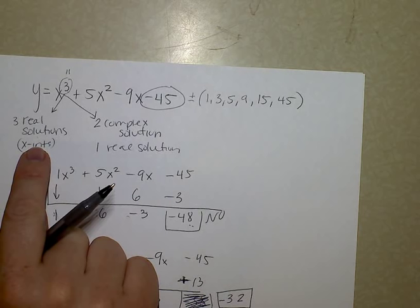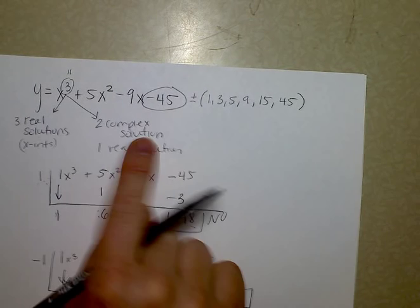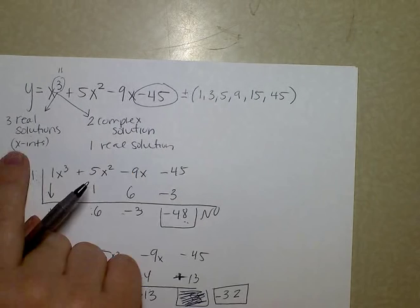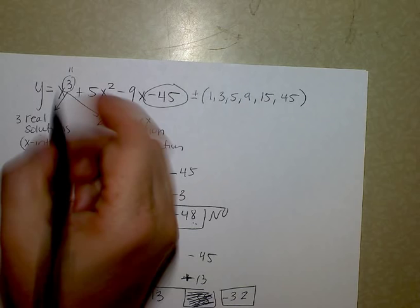Let's jump ahead and do the fourth part of the first problem. Of the solutions you have, are they three real or two complex and one real? Remember, if it's complex, your answers would have i's. Which one is it? Three real.